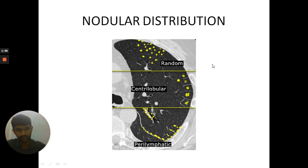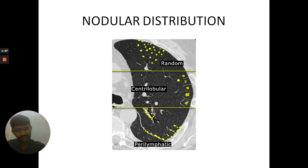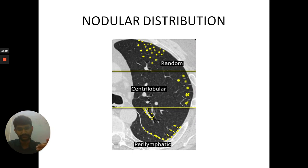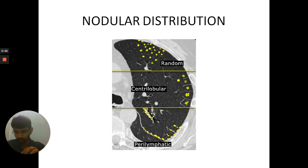Random distribution means there is no uniform distribution of nodules — they can be present anywhere, either in the periphery or in the center. The diseases showing random distribution include miliary TB, metastasis, and fungal infection. Centrilobular distribution means the nodules are within the center of the secondary pulmonary lobule, away from the septa and away from the fissures around the secondary pulmonary lobule.